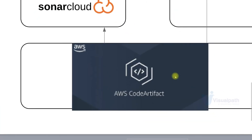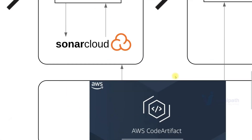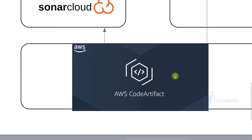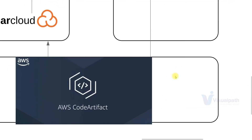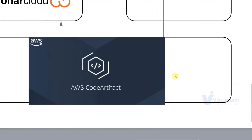For any dependency, CodeBuild is going to download it from AWS CodeArtifact. This job will also upload the reports to SonarCloud and get the results, which will then trigger another CodeBuild job. This second job will build the artifact, version it, and store it on an S3 bucket. If there are any dependencies required for the Maven build, they will again be downloaded from the AWS CodeArtifact service.